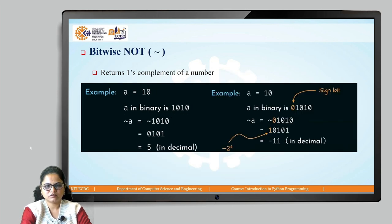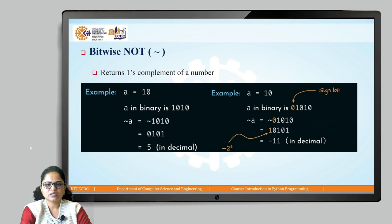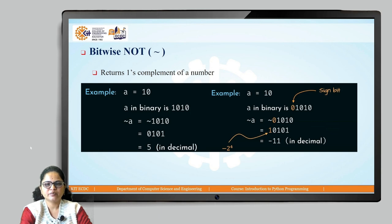Then the bitwise NOT operator, which returns the 1's complement of the number. It is represented using the tilde operator. To get the 1's complement of a number, we first convert decimal 10 to binary, which is 1010. Then NOT of A means we just replace 0 by 1 and 1 by 0. However, the NOT operation is performed along with the sign bit of the number.